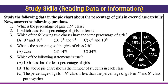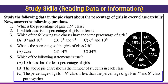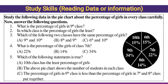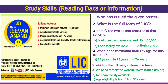Fifth question: which of the following statements is true? '10th class has the least percentage' — wrong. 'The above pie chart shows the number of students in each class' — wrong. 'The percentage of goals in ninth class is less than the percentage of goals of seventh and eighth classes put together' — absolutely right, option C is the right answer.